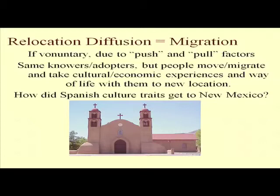If migration is voluntary, it is due to both push and pull factors — perceived factors of the people who are moving. Push factors are things people perceive about where they are that cause them to want to move. Pull factors are what people perceive about the places they might go — the place with the strongest pull factor is where they'll want to go. In the case of the Spanish, the push factors were a lack of economic opportunities where they were, and the pull factors were largely a desire to find new land, start a new life, and establish a new place. So the same people migrate and take their cultural and economic experiences with them — the way of life goes to the new location.